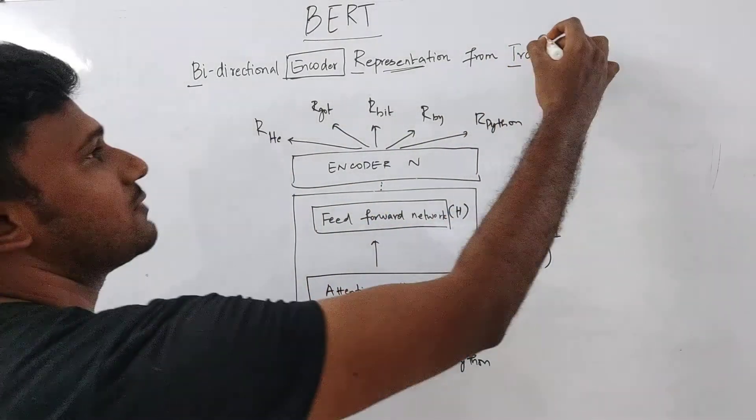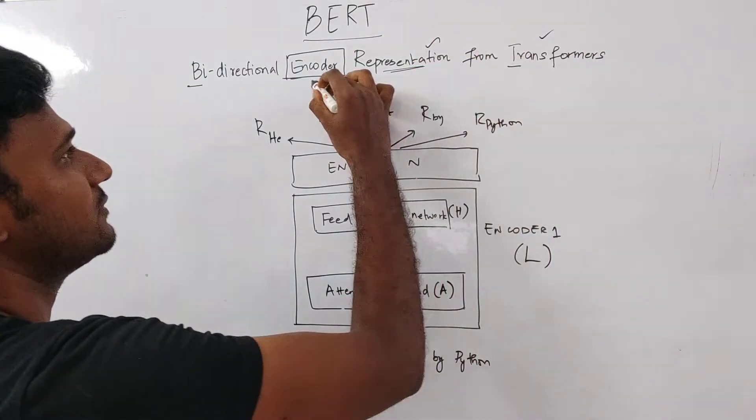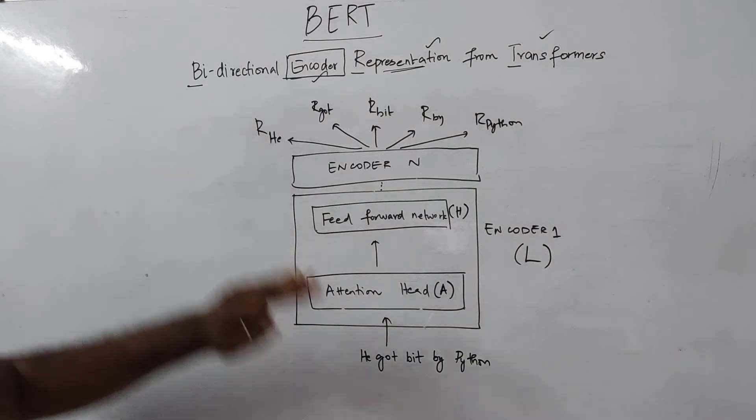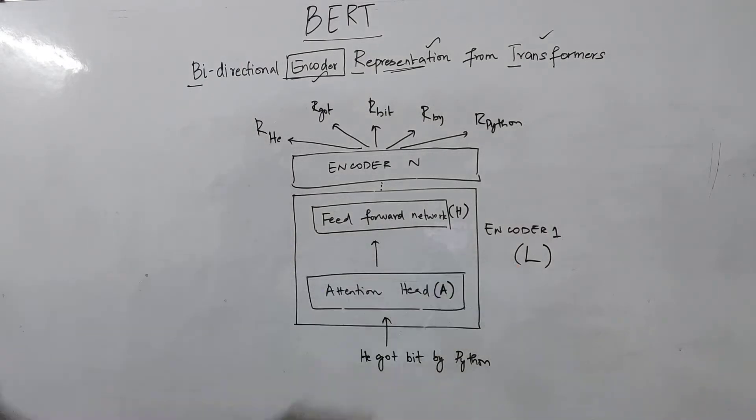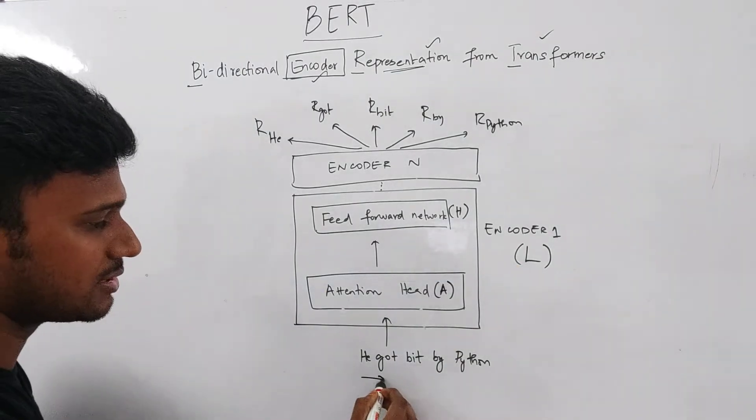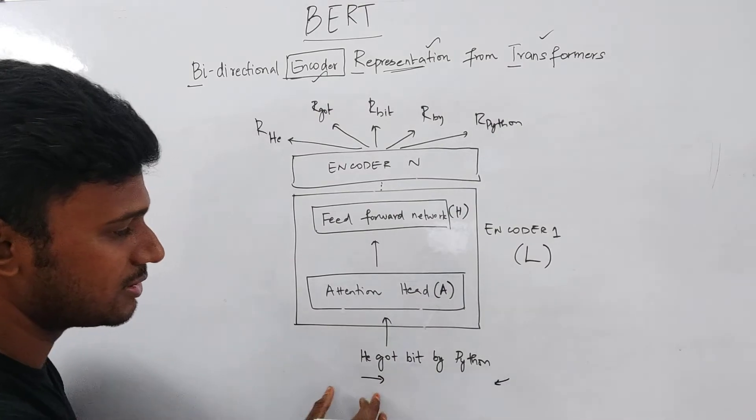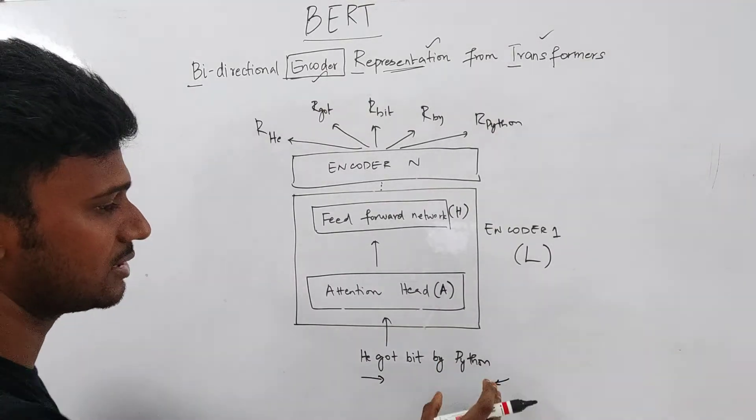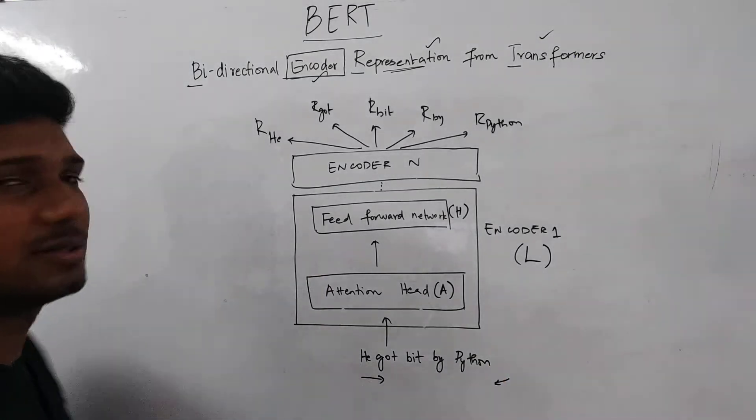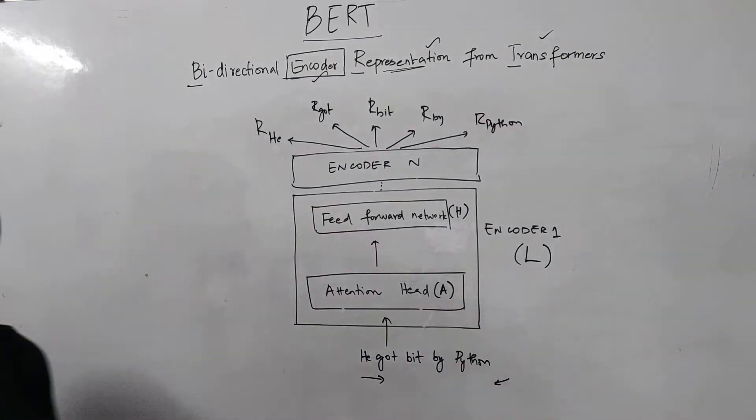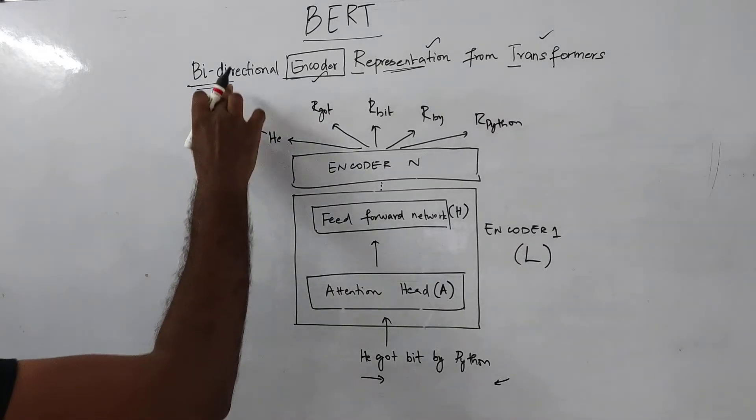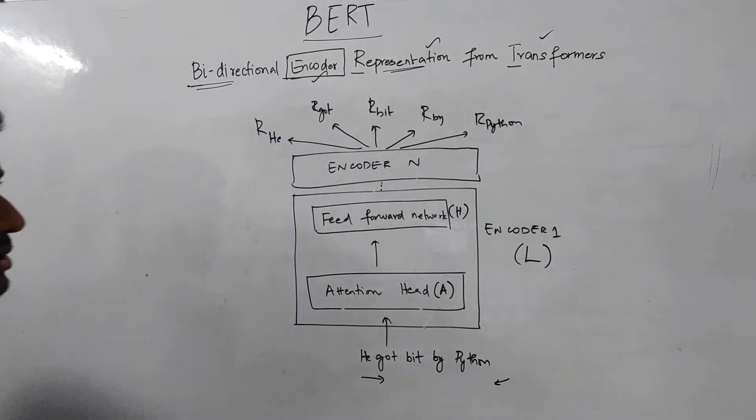So we know what transformer is, we know what representation is, and we know what encoder is. But what is bi-directional? Here, the encoder basically reads the sentence, reads the input sentence in both directions. It reads the sentence from left to right and also it reads the sentence from right to left. So since it reads the sentence in both directions, we attach this bi-directional here. So we have bi-directional encoder representation of transformers.